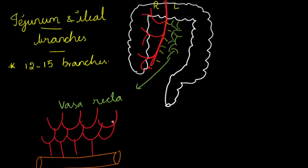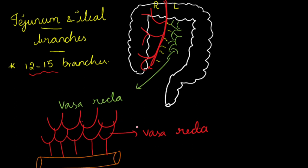These anastomosing structures are called vasa recta. The jejunal and ileal branches, which form the left side branches of the superior mesenteric artery, are 12 to 15 in number, anastomose with each other, and form arterial arcades called vasa recta.